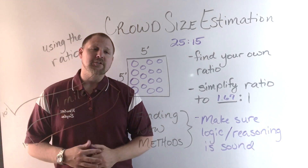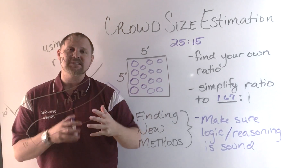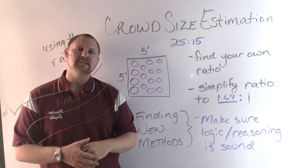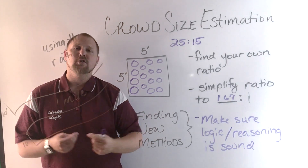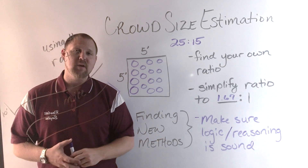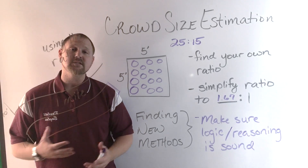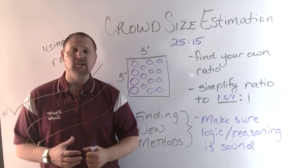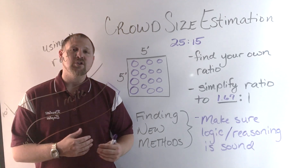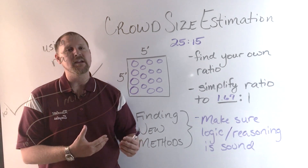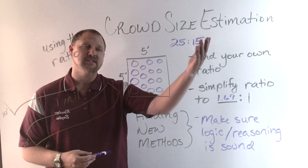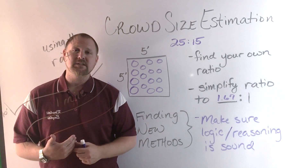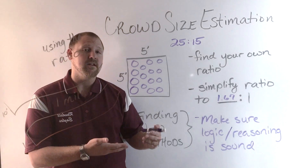This is only one method for finding the number of people that fit inside a certain area. This class is Advanced Quantitative Reasoning, so we're trying to reason through our quantitative measures and processes. Finding new methods to solve the same problem is essentially what this class is all about. The major thing when finding new methods is making sure the logic and reasoning are sound with no major holes. There may be small gaps, but since it's estimation that's acceptable — we want the thought process to make sense throughout.